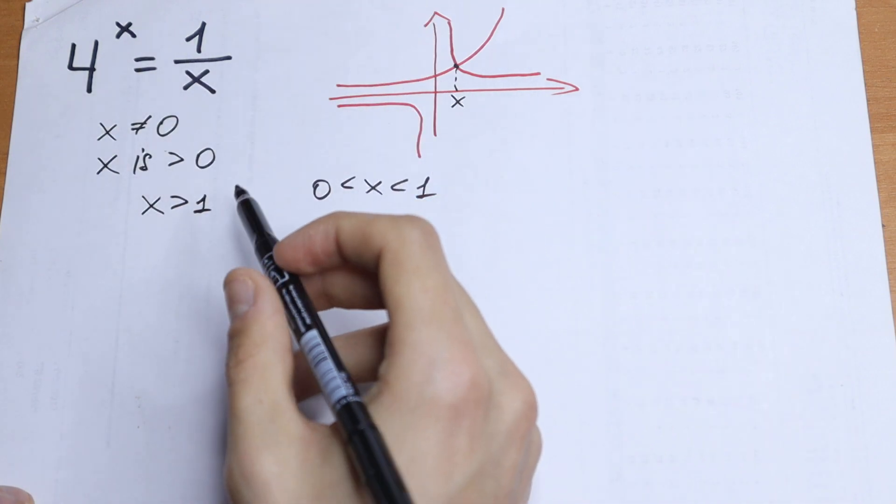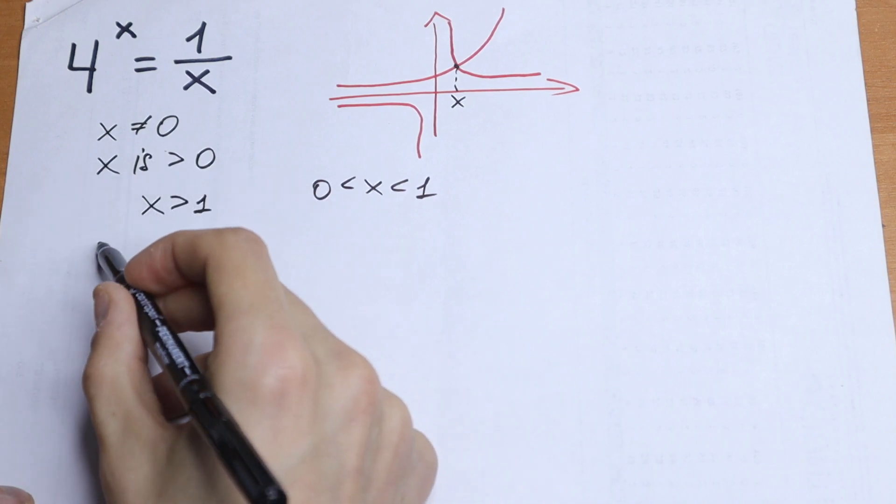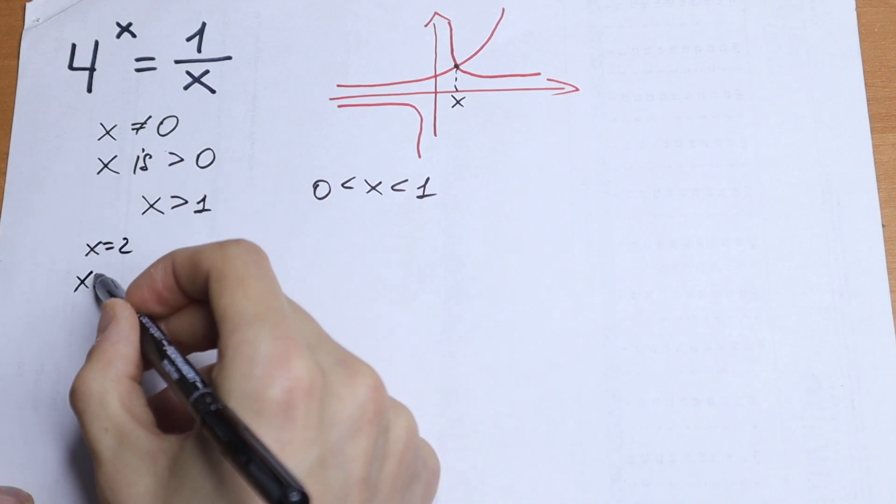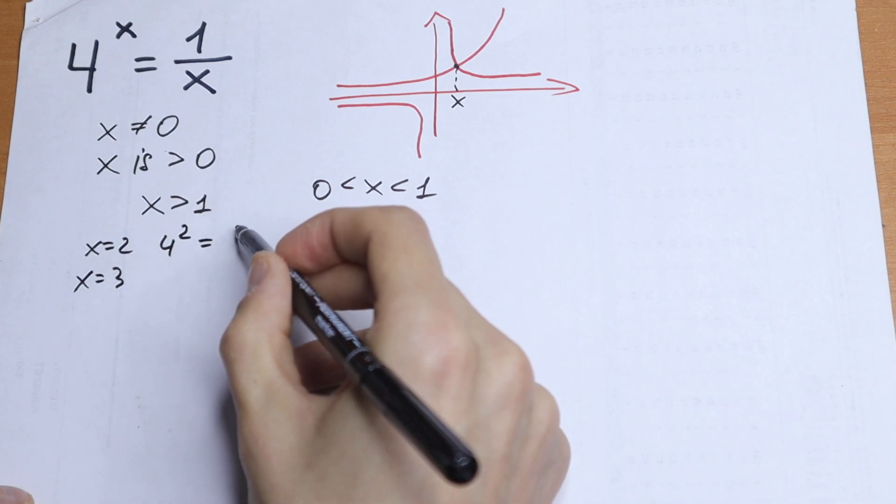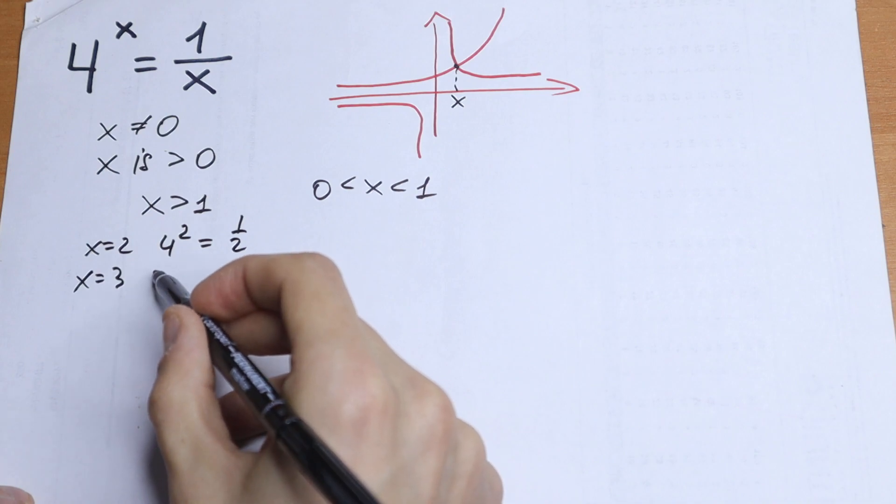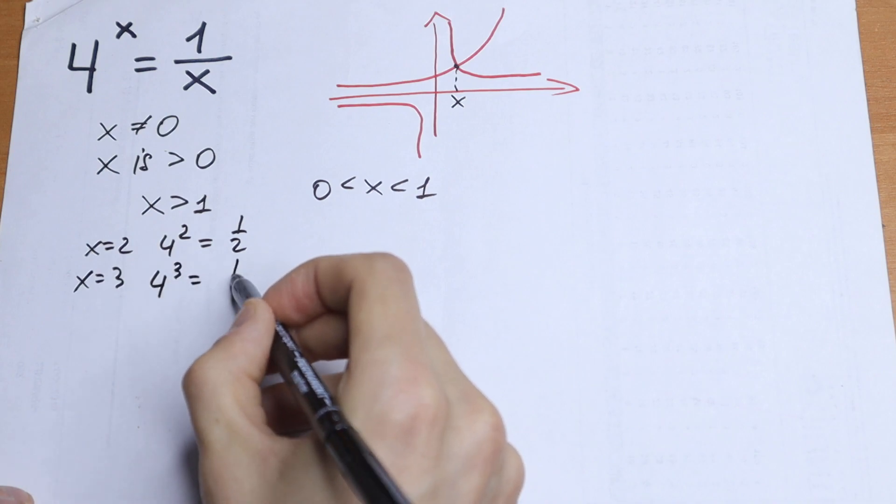Because for example, like 2, we will have x equal to 2, x equal to 3. I'll check it real quick. So we will have 4 squared equal to 1 half, 4 cubed equal to 1 third.